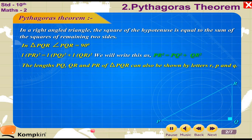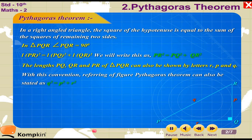The lengths PQ, QR, and PR of triangle PQR can also be represented by letters R, P, and Q. With this convention, referring to the figure, the Pythagorean Theorem can also be stated as Q square is equal to P square plus R square.